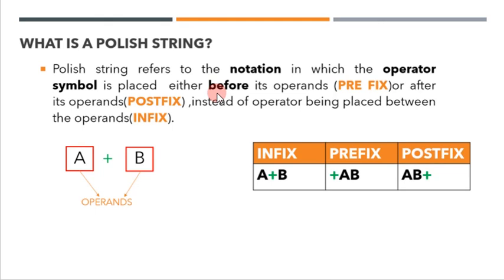This is an expression where A and B are operands. If the operator is kept in between the operands like this, it is called an infix expression. But if I take the operands and place the operator before them, it is called a prefix expression. Similarly, if I place the operator after the operands, this is called a postfix expression. So polish strings are actually the prefix or postfix notations.